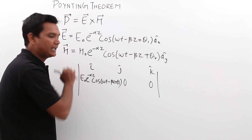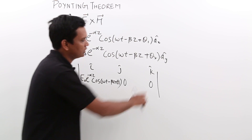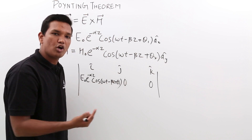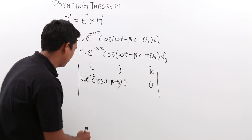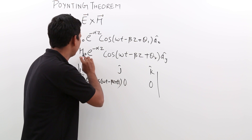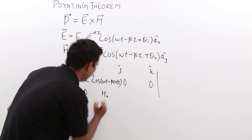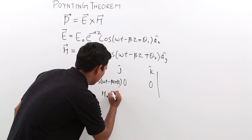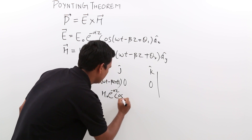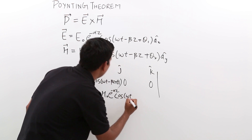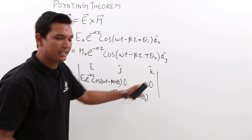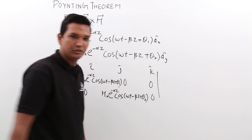For the magnetic field, it has only a component along j-cap, which is H-naught e to the power minus alpha-z cos(omega-t minus beta-z plus theta-2). The i-cap and k-cap components are both 0.